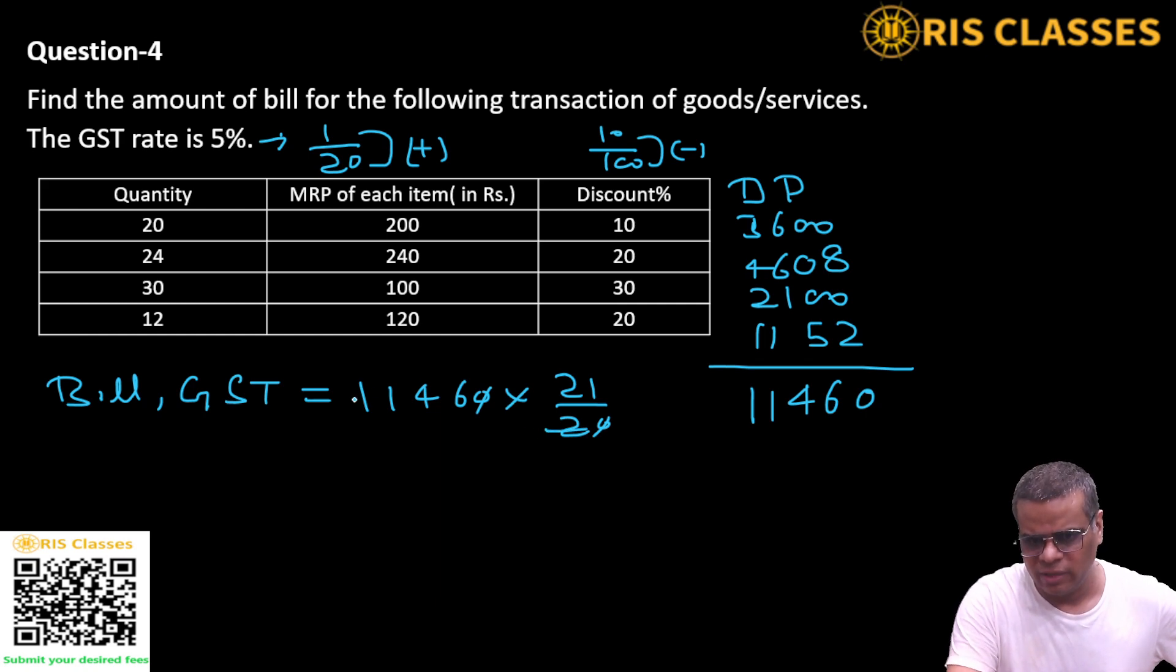Zero, zero get cancelled. 2, we divide, so 2... 5, 10. 1 and 14 is 2, 7. 14 and 2 is 3, 6. 5, 73 into 21. 21, 3, 63 carry 6. 21, 7, 147 and 6 is 153 carry 15. 21, 5, 10, 5 and 15 is 140.